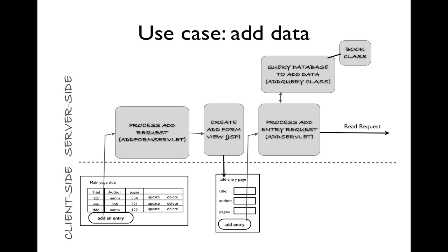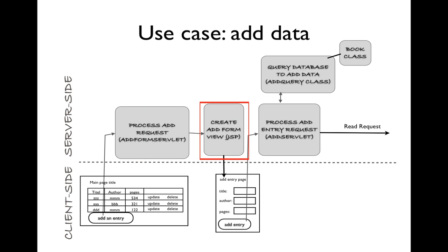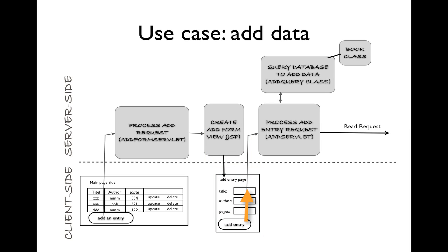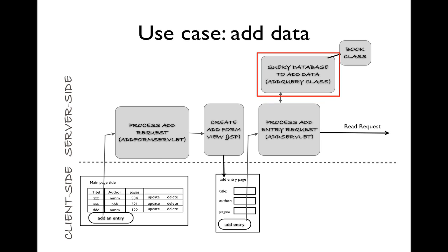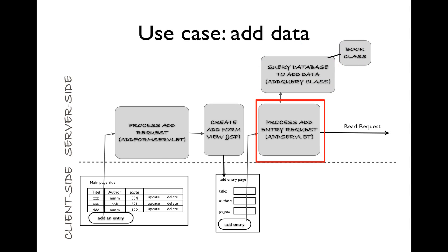Here we see the use case for adding a book to the database. When Add Entry is clicked, a request goes to the server to the Add Form servlet, which passes execution to the Add Form view JSP, creating the response to send the form back to the client. The user enters data and clicks Add Entry, sending a second request to the Add Servlet. Add Servlet enlists a helper class called Add Query to add data to the database using the book class. When complete, instead of moving to a view, it makes a read request to browse the data again from our previous use case.